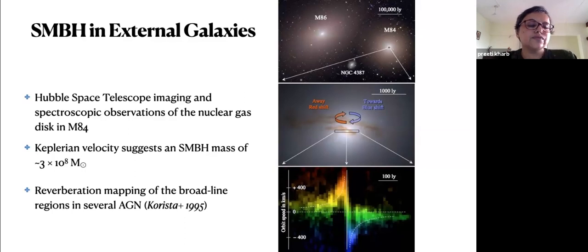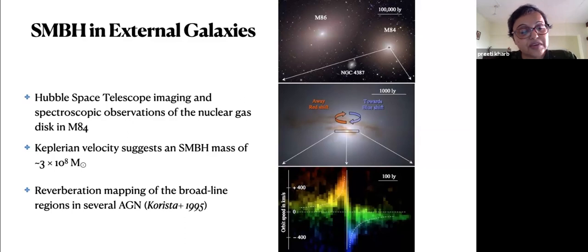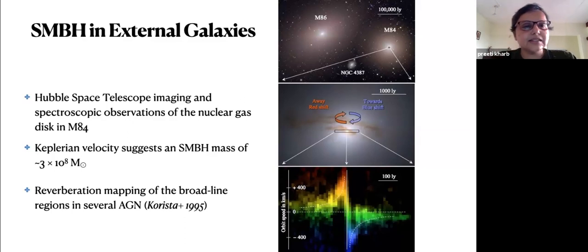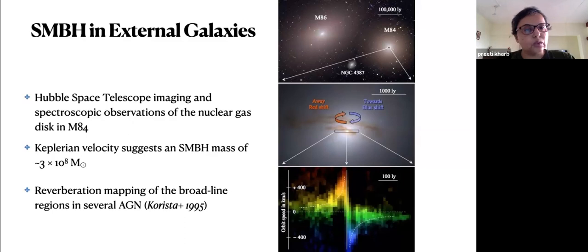For other galaxies where you can't resolve individual star or gas motion, black hole masses have been found using the method of reverberation mapping. We now know that all massive galaxies have a supermassive black hole at their centers.